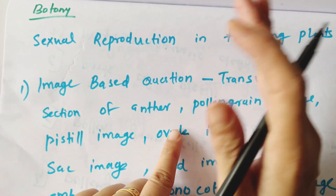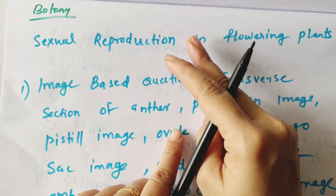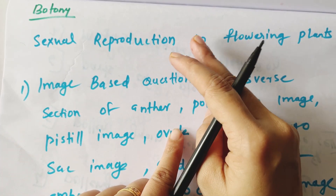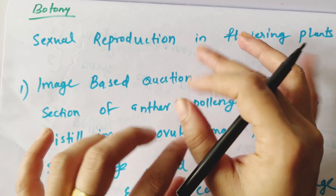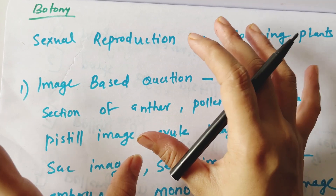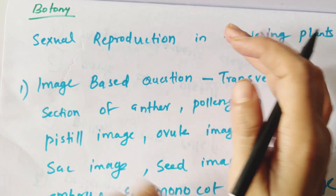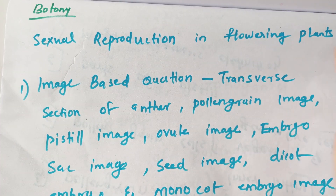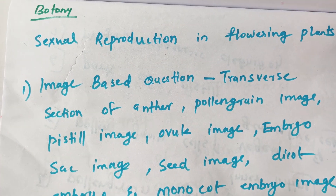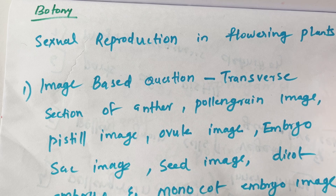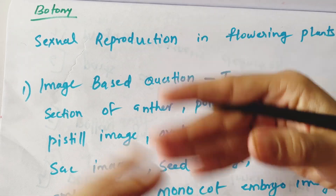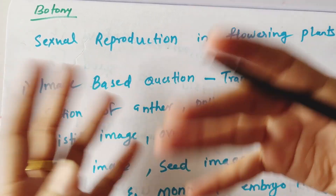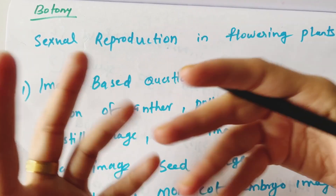Now, we are going to talk about Botany. We are going to learn two different topics. We are going to discuss the chapter on Sexual Reproduction in Flowering Plants. If you are interested in these questions and answers on this topic,